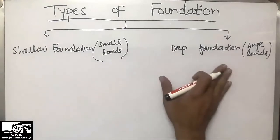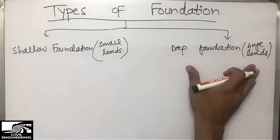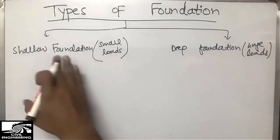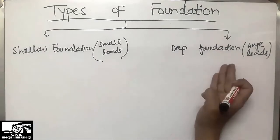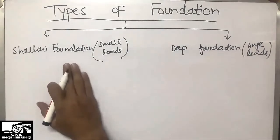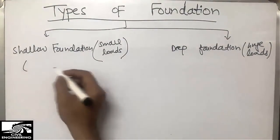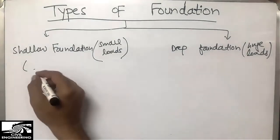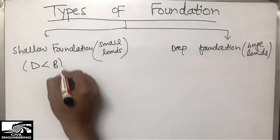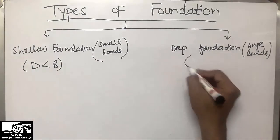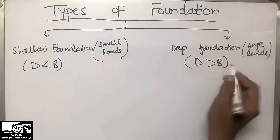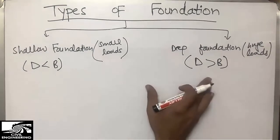Shallow foundation is mainly for small loads coming on residential buildings, while deep foundation includes structures like bridges. Terzaghi, the Father of Geotechnical Engineering (1959), states that when the depth of the foundation is less than the width of the foundation, we call it shallow foundation, and when the depth is greater than the width, we call it deep foundation.